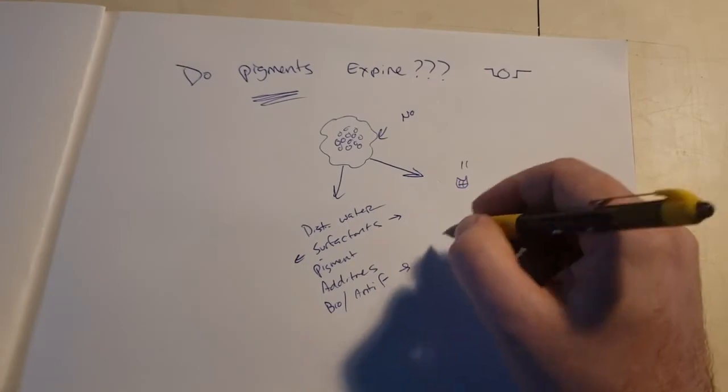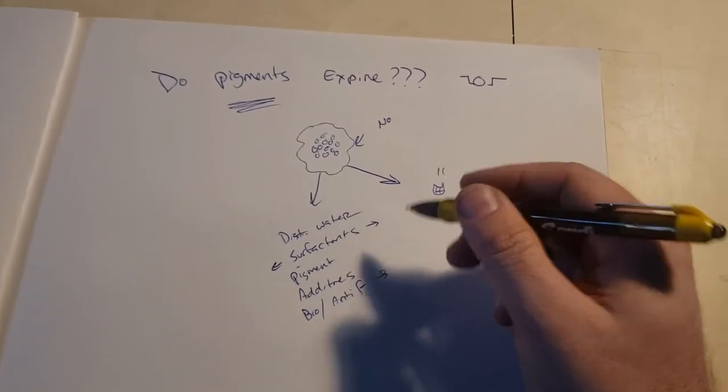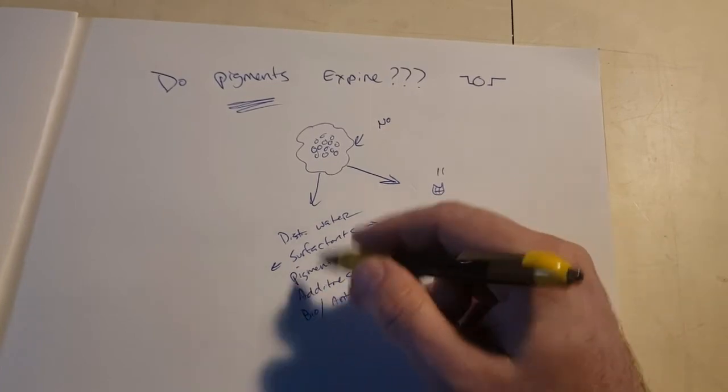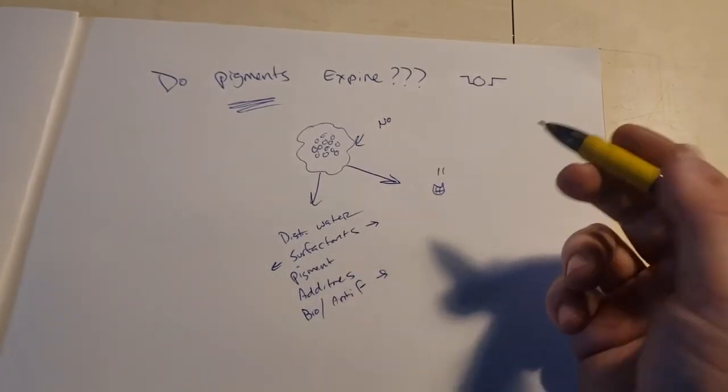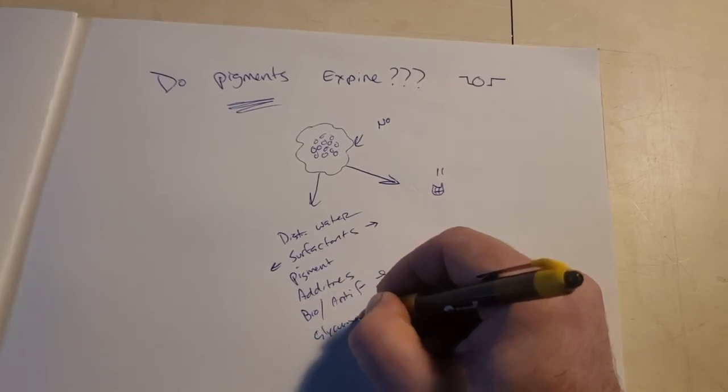So we'll go biocidal, anti-fungal, which we can put anything that's like alcohol, rose water. Some people put Listerine, vodka, you know what I mean? So like you'll have these things in there and then sometimes they'll just have like a thickening agent, which you'll have like glycerin, right? Glycerin. Yay.